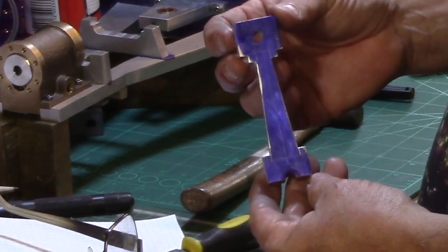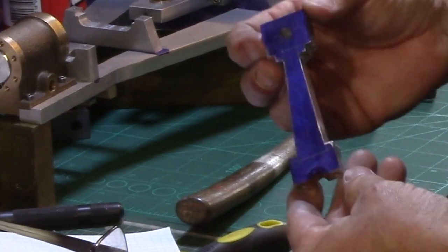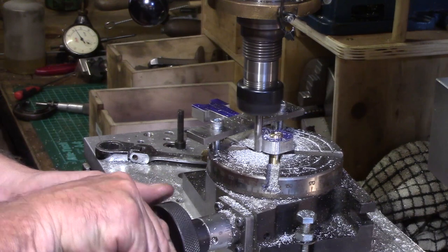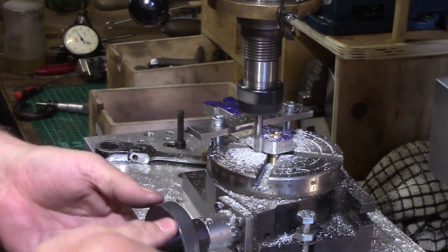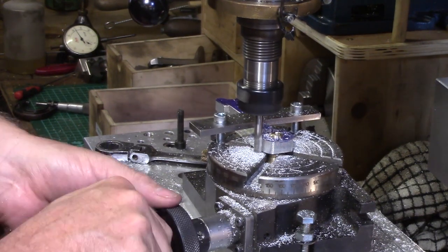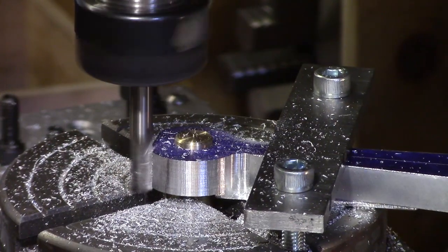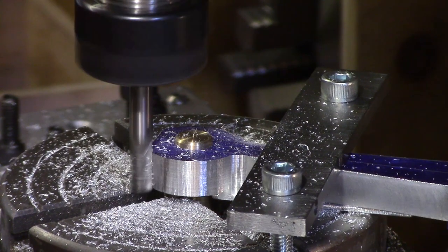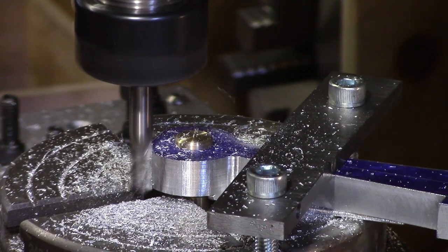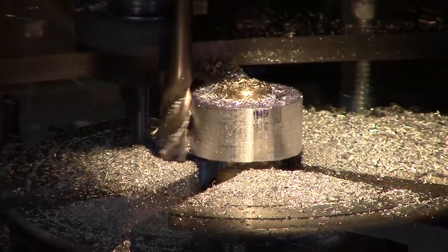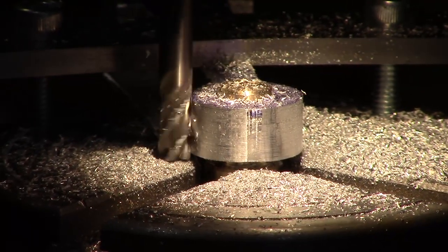It was time to set up the rotary table and start forming the round end of the rod to suit the slot in the crosshead. A centre pin was made to suit the rotary table and the bearing hole in the end of the conrod. This was clamped to the table using a shim of aluminium underneath to raise it from the bed to allow the cutter to clear the underside. Progressive cuts were made to round off the end to final dimensions.